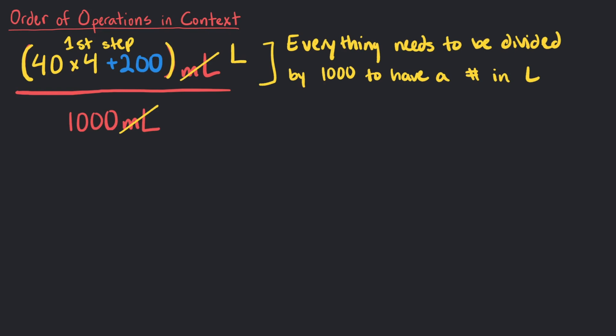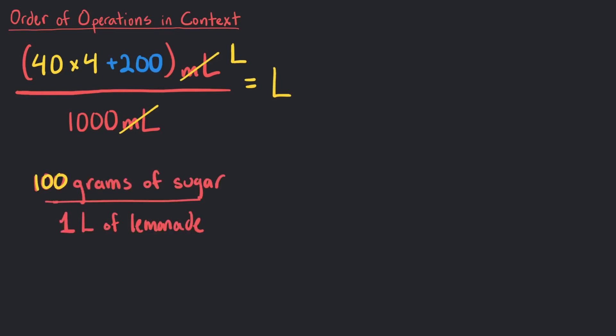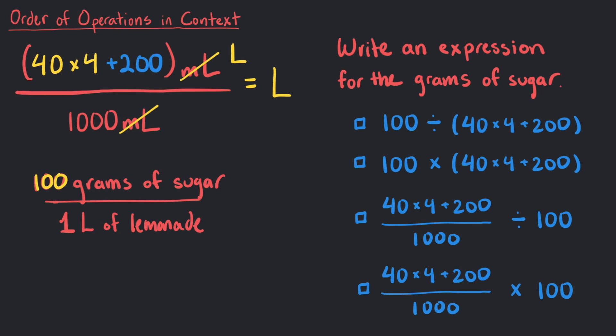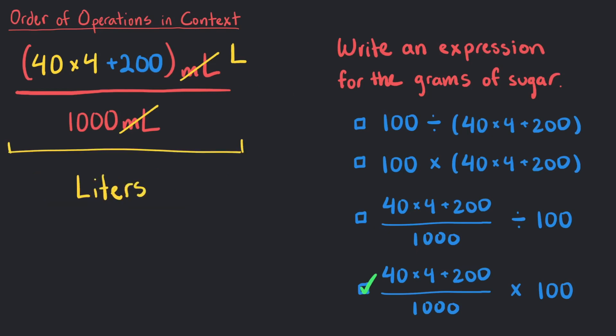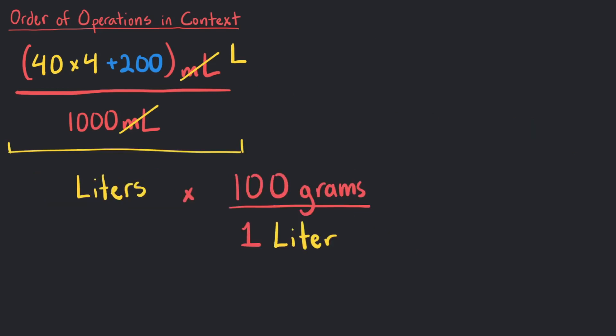To find the grams of sugar, we will now use the grams per liter of the lemonade. If there is 100 grams per liter, write an expression for the grams of sugar. Yes, we want to take our previous expression that shows our total volume in liters and multiply it by 100 grams over liters. This way, the liters will cancel out and we are only left with grams of sugar.